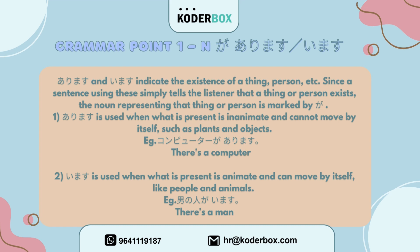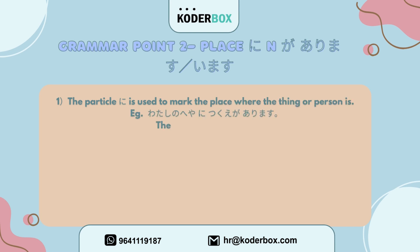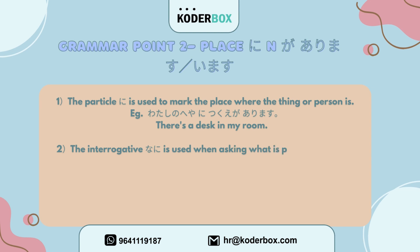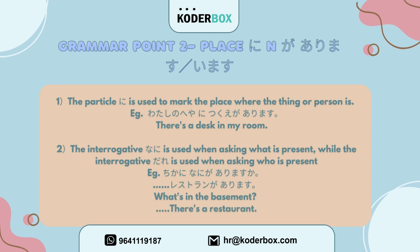Second, imasu is used when what is present is animate and can move by itself, like people and animals. Example: Otoko no hito ga imasu — There is a man. Grammar point two: Place ni + ga + arimasu / imasu. The particle ni is used to mark the place where the thing or person is. Example: Watashi no heya ni tsukue ga arimasu — There is a desk in my room. The interrogative nani is used when asking what is present, while dare is used when asking who is present. Example: Chika ni nani ga arimasu ka? Resutoran ga arimasu. What's in the basement? There is a restaurant.